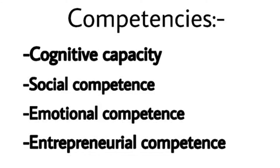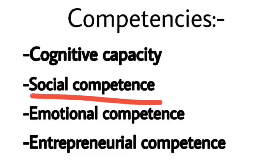Next category hai social competence - matlab society mein jo log rehte hain hamare aas paas, unse hum kaisa deal karte hain, kaisa behavior hai hamara, society ke jo rules hain unhein hum kitna maante hain, logon ki kitna sunta hai, zaroorat mand ki kitni help karte hain, doosron ke perspective ko samajh paate hain ya nahi. Matlab social competence hota hai jahan yeh sab hota hai - wahan log aapko ek achhe insaan ke roop mein dekhte hain. Yeh bhi ek tarah ki intelligence hai Indian context mein.